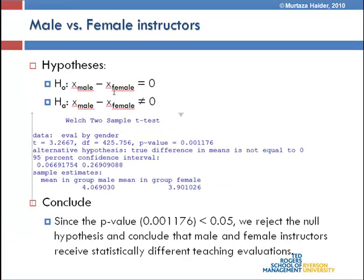We are testing that the male and female difference equals zero against not equal to zero. The p-value is 0.0011. Since the p-value of 0.001176 is significantly lower than 0.05, we reject the null hypothesis. When we reject the null hypothesis, the alternative becomes our working hypothesis, and we conclude that the average evaluations of male and female instructors are statistically different because the difference in means is not equal to zero — it is statistically different from zero. Hence, male and female instructors do not receive the same teaching evaluation.